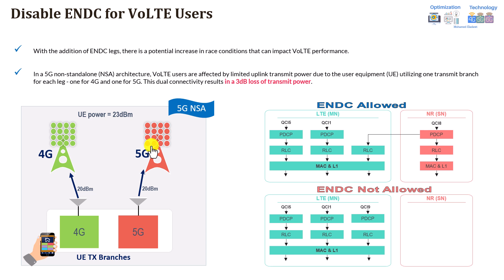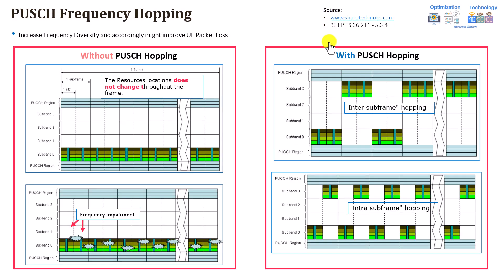This is similar to the carrier aggregation scenario highlighted in the previous slide. Now let's jump to the last feature. This feature is not particularly related to VoLTE, but it can also benefit VoLTE. These pictures are from a Shared Tech Note — a link will be added in the video description for more details. The main idea of PUSCH hopping in general is that it can provide very good improvement through something called frequency diversity.